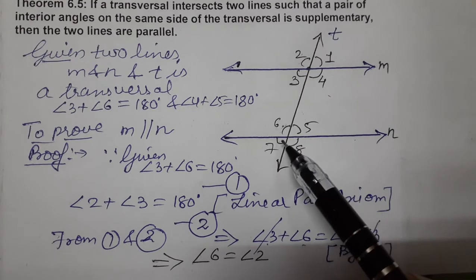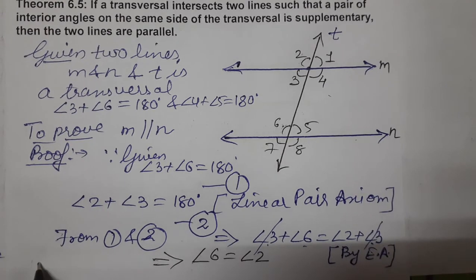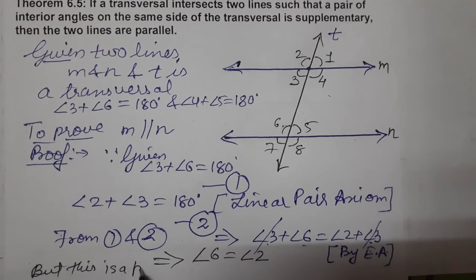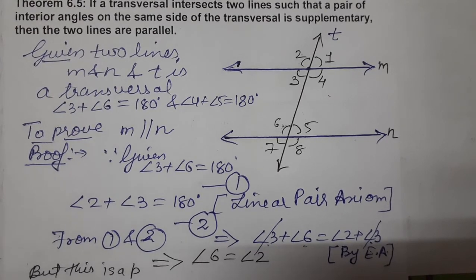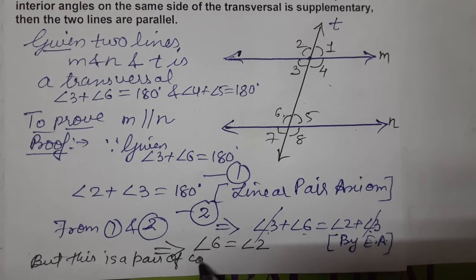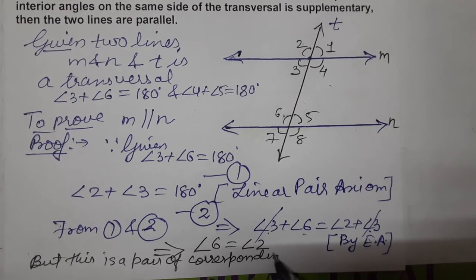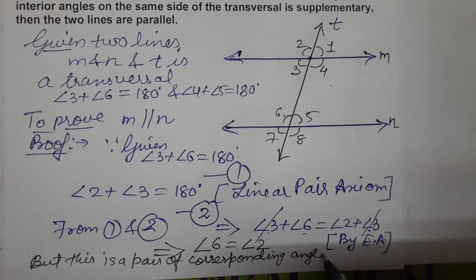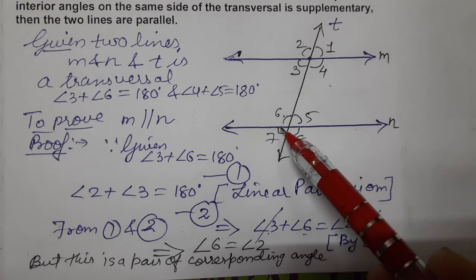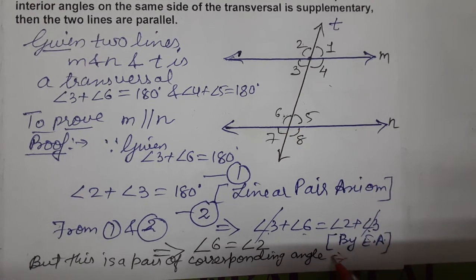But this is a pair of corresponding angles. Angle 6 and angle 2 are corresponding angles. And if these corresponding angles are equal, then what happens to the lines? The lines become parallel.